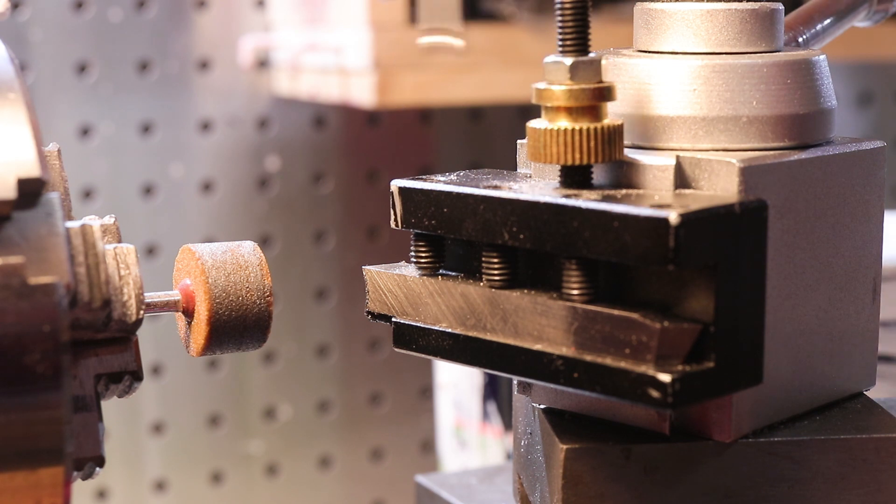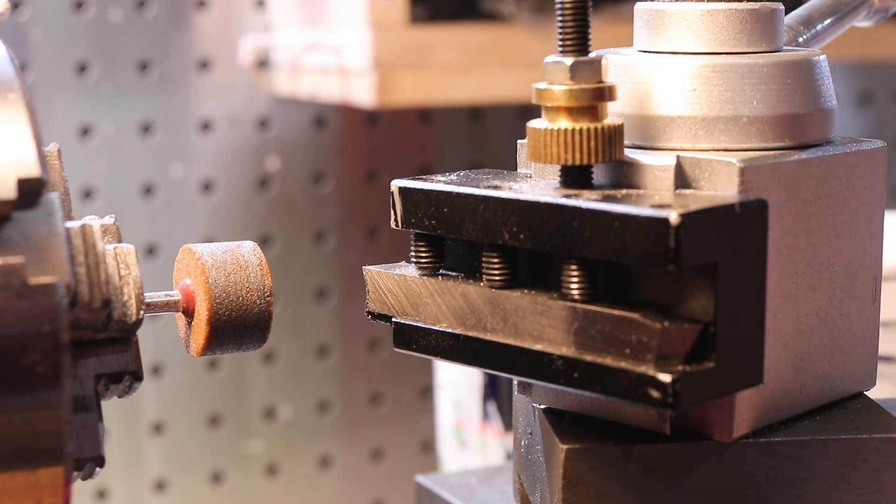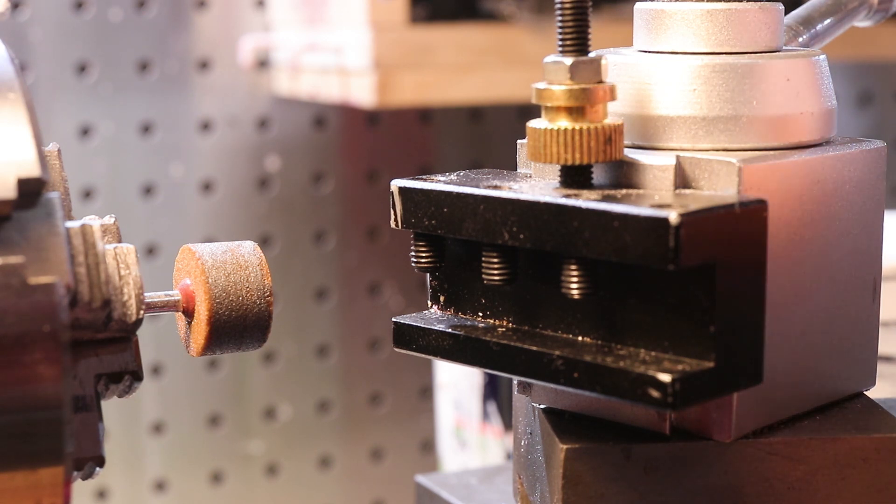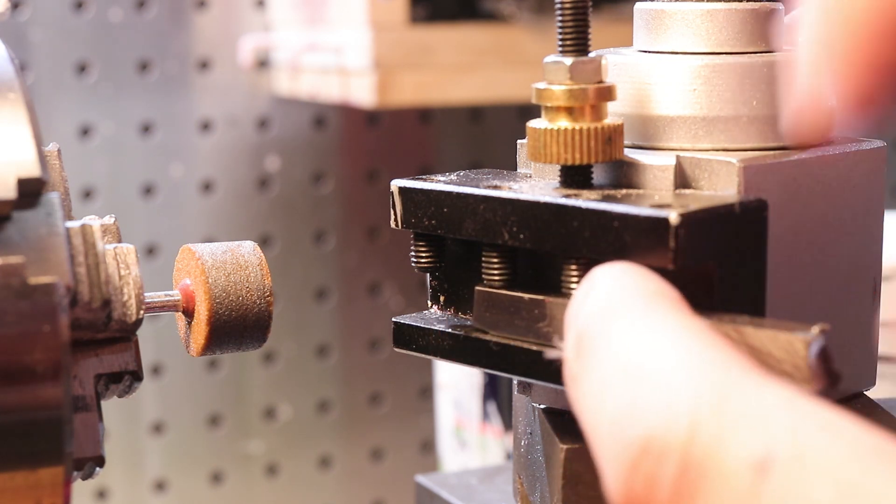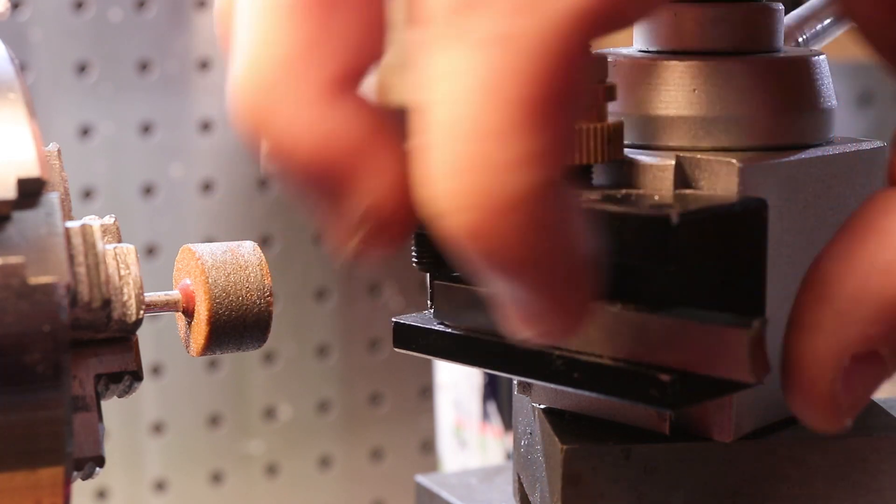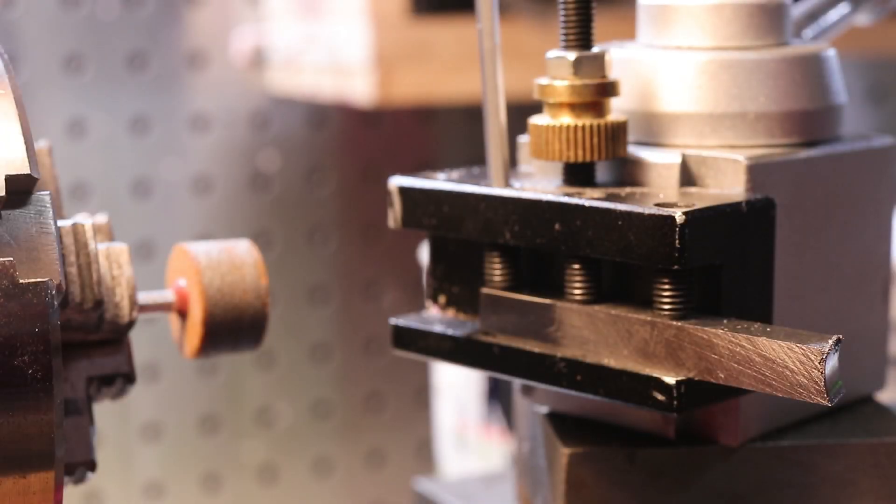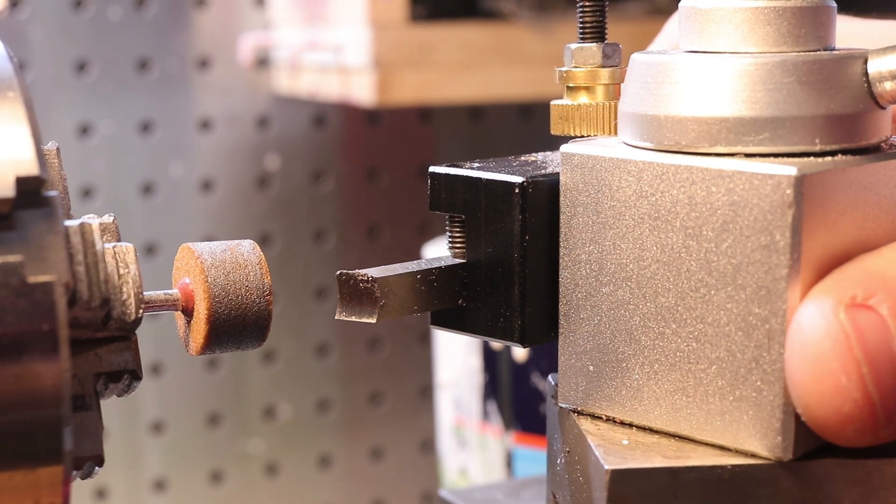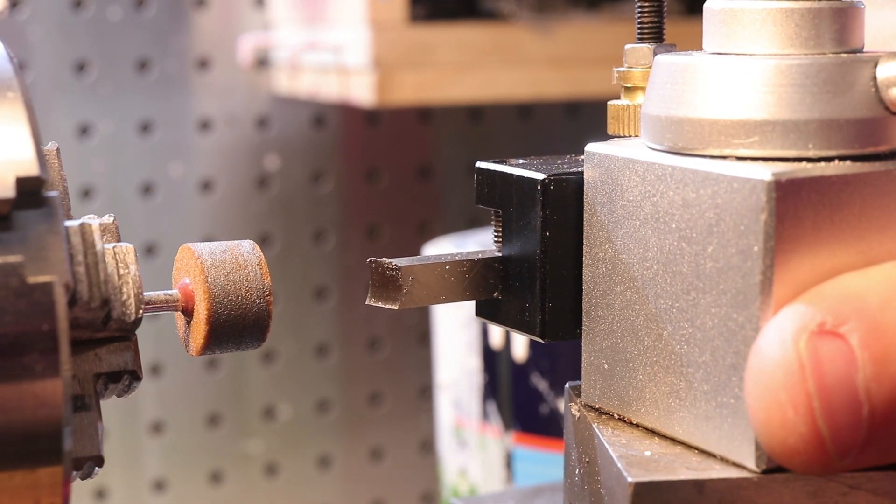Next, we need to cut the side relief, so take the steel out of the tool holder, turn it around, and flip it upside down. Then move the tool post so the tool is parallel to the lathe bed.